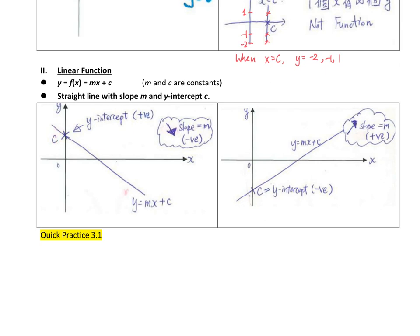然後 c 就是 y intercept, 即是代表如果 y equals to mx plus c, 這個 c 是 positive number, 即是代表它在 above the x-axis, 它在 x-axis 上面就是 positive. 但是如果 y intercept, 即是 c 如果是 negative, 意思是說它會在 x-axis 下面. 現在請大家做了 quick practice 3.1.